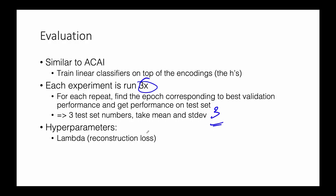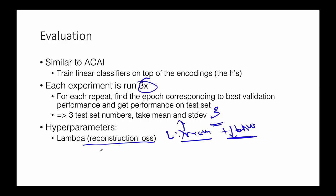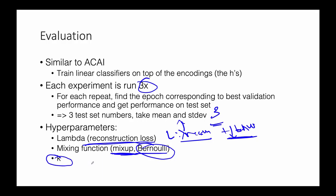Key hyperparameters include lambda, the reconstruction loss weight. The total loss is lambda * reconstruction + GAN loss, where higher lambda gives less weight to the GAN loss — this needs careful tuning. We also explore mixing functions (mixup and Bernoulli), and the K value — how many examples to mix at a time: 2, 3, 4, 6, or 8.